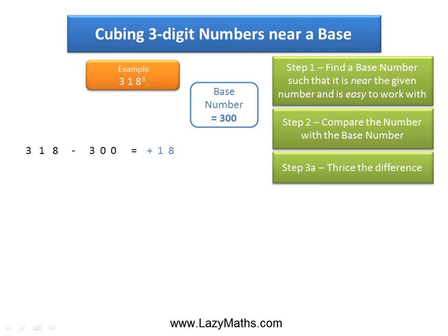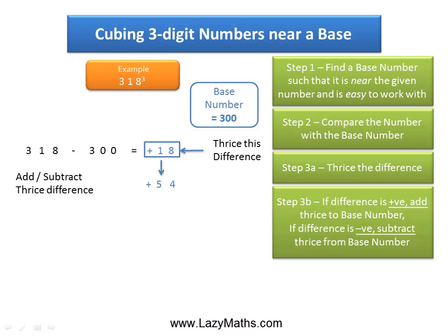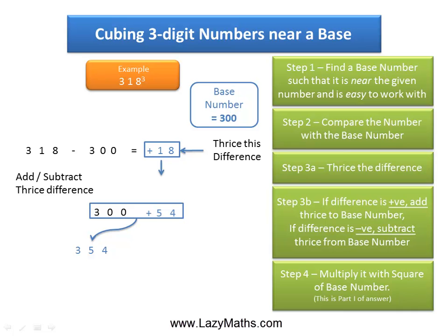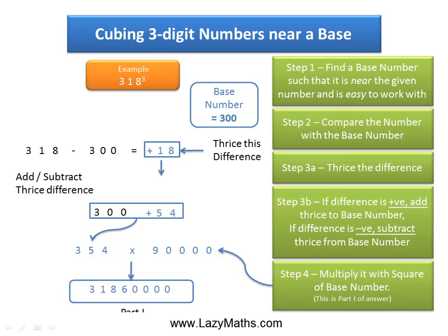The next step is to triple the difference. 3 times 18 is equal to 54, and then add that to the base number. So 300 plus 54 gives us 354. The last step to get Part 1 of the answer is to multiply 354 by the square of the base number. The square of 300 is 90,000, and 354 times 90,000 gives us 31,860,000. This becomes Part 1 of the answer.